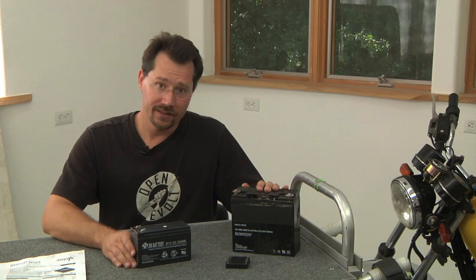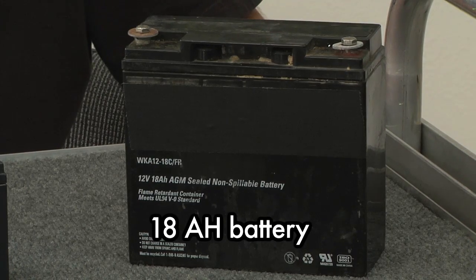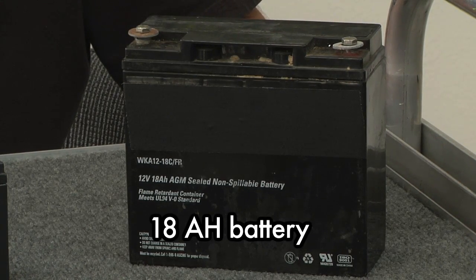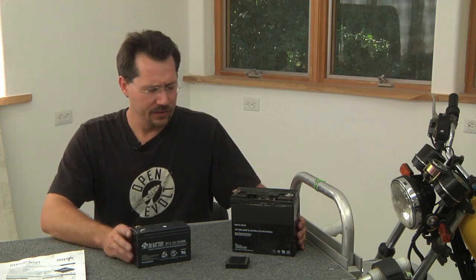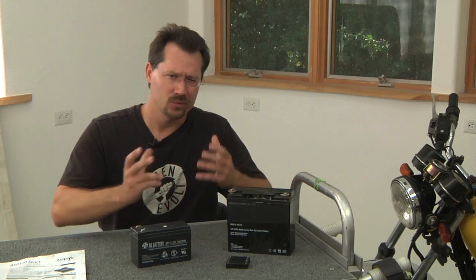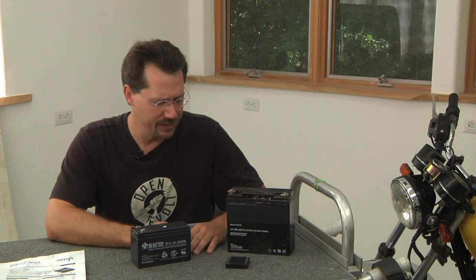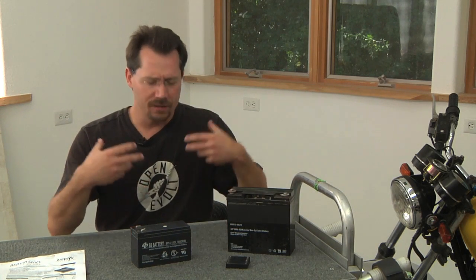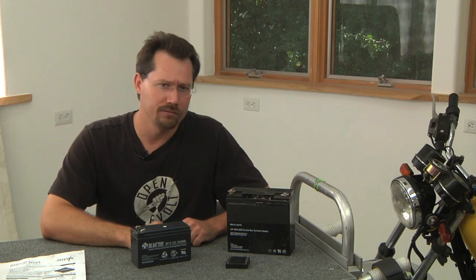Now on the other hand, this one is an 18 amp hour battery so you'd be able to run that headlight for considerably longer. On the other hand, it's starting to get kind of big, kind of heavy, there's not a lot of room in the motorcycle anyways. So wouldn't it be great if there was some other way of getting that 12-volt power?